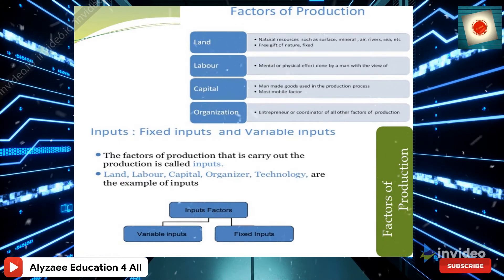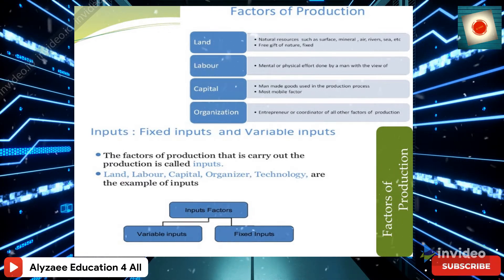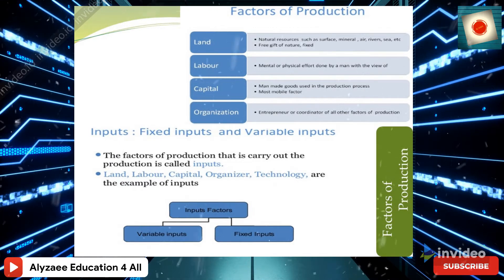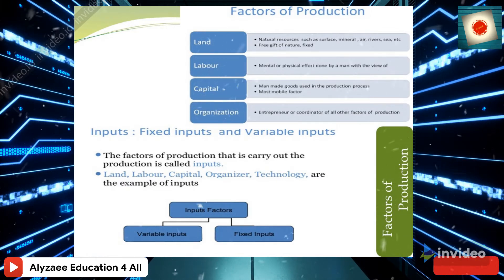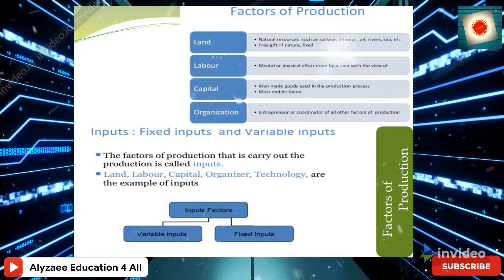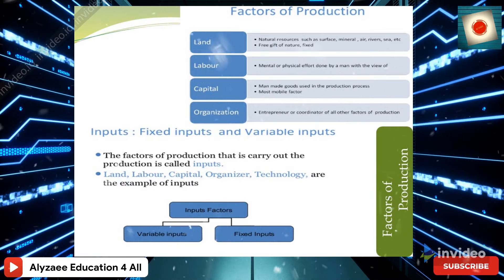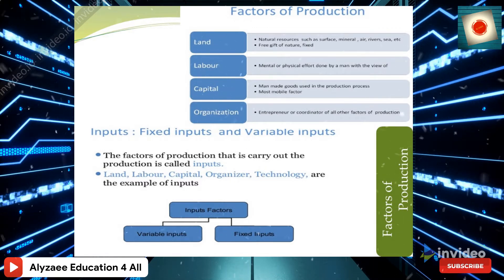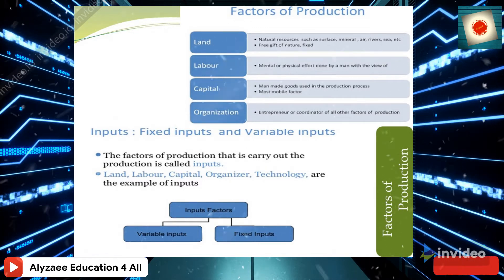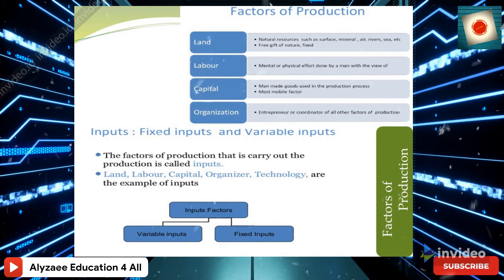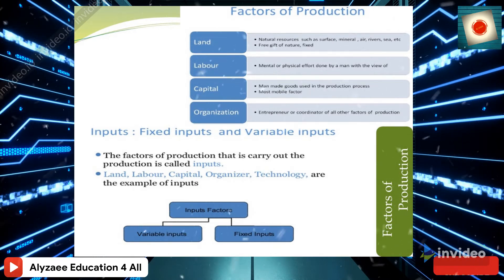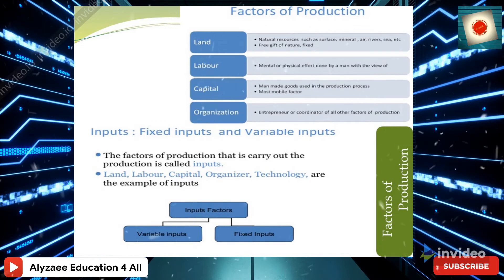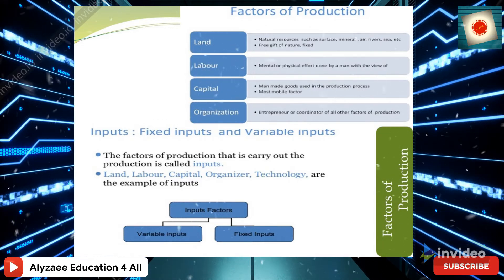Labor is the mental or physical effort done by a person with the aim of getting output. Capital refers to man-made goods used in the production process and is the most mobile factor. Organization, or the entrepreneur, is the coordinator of all other factors of production.